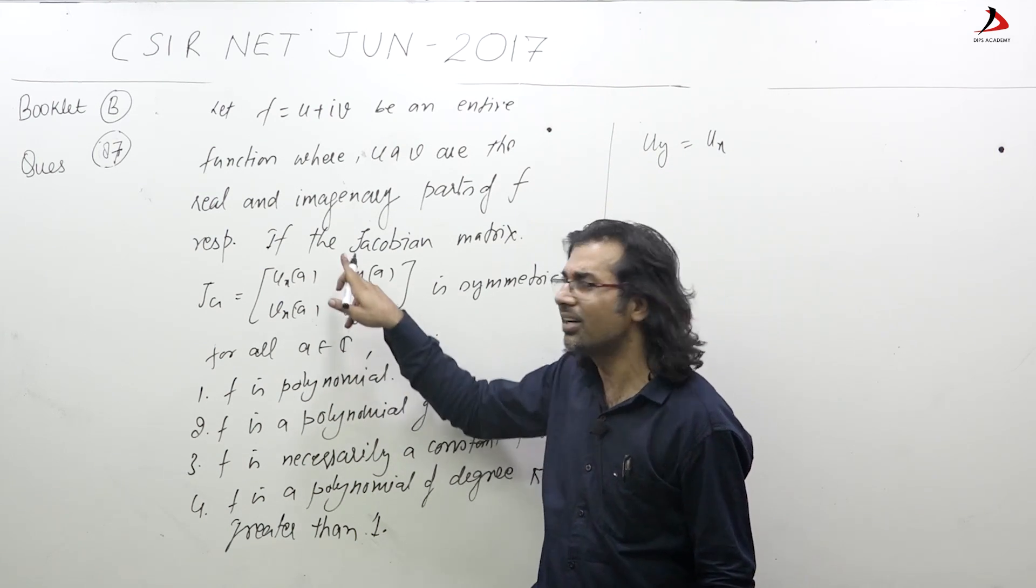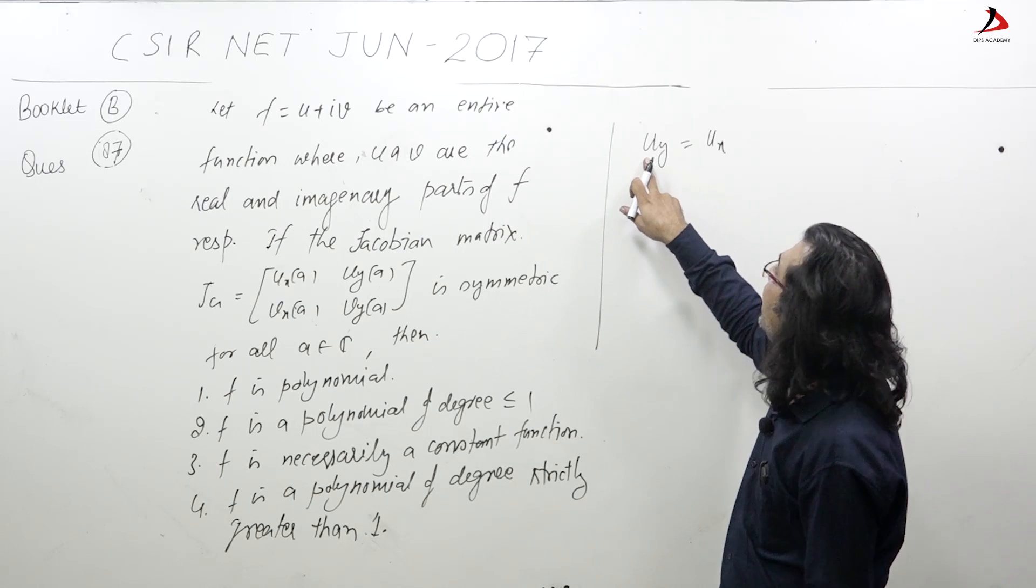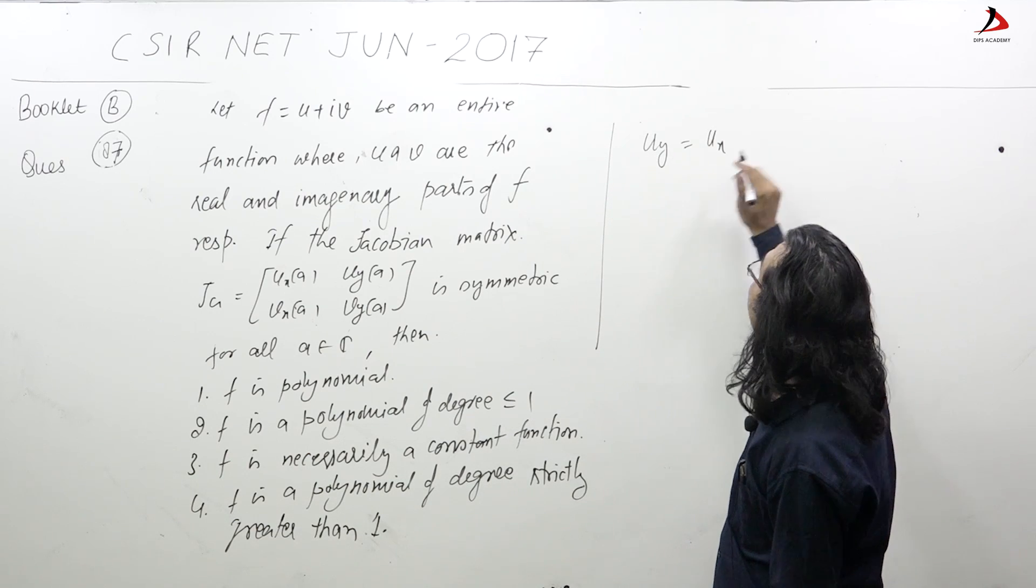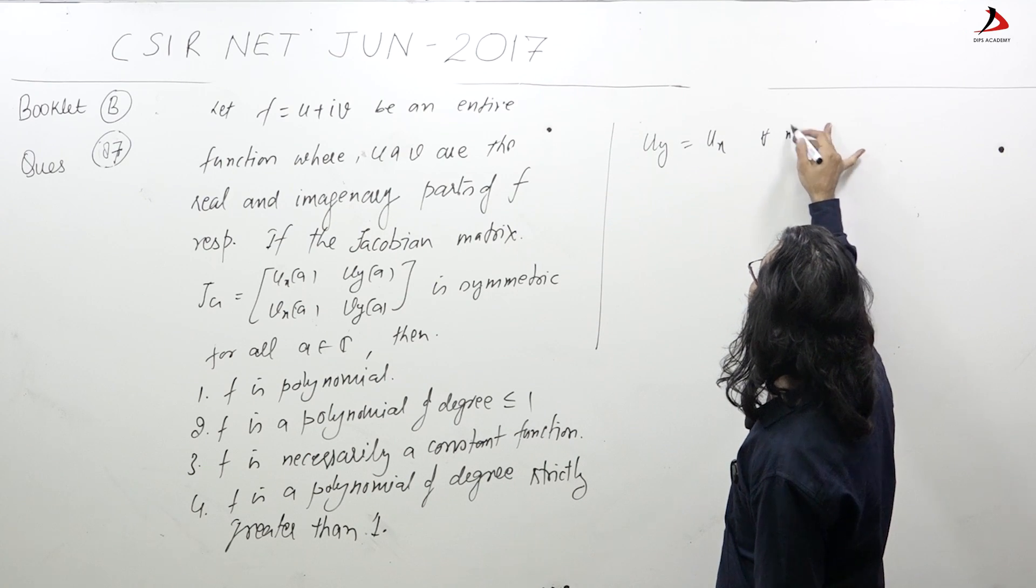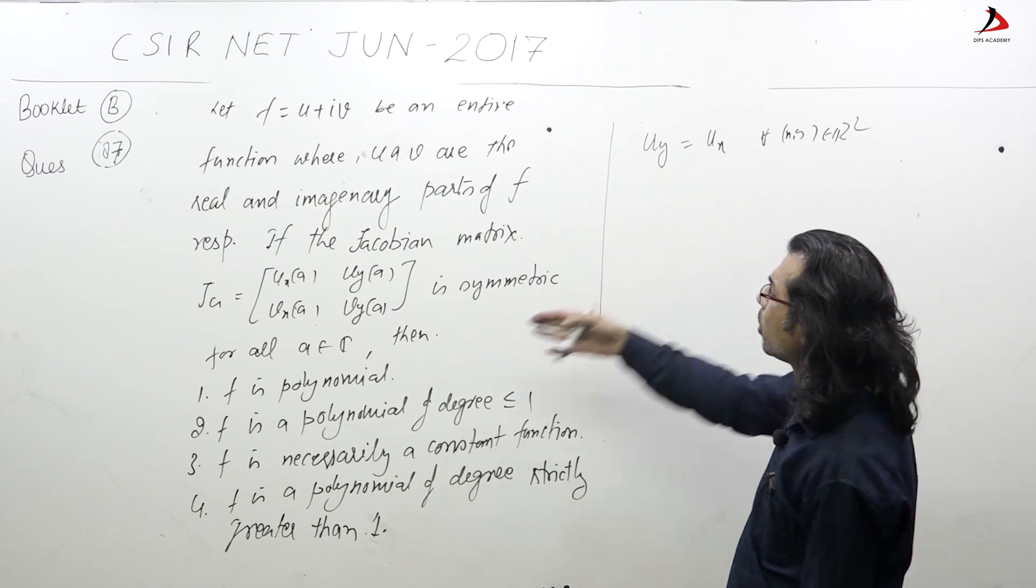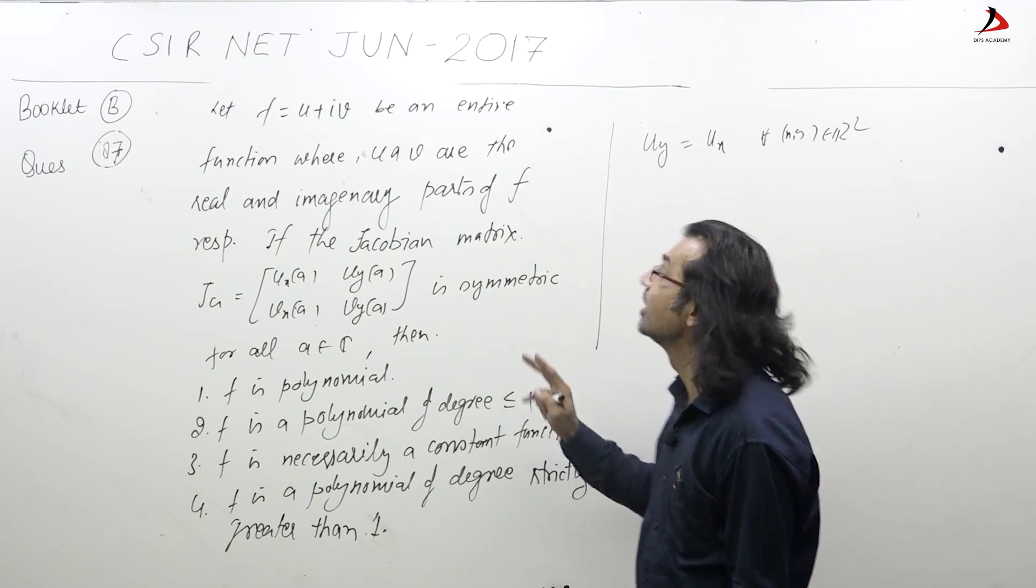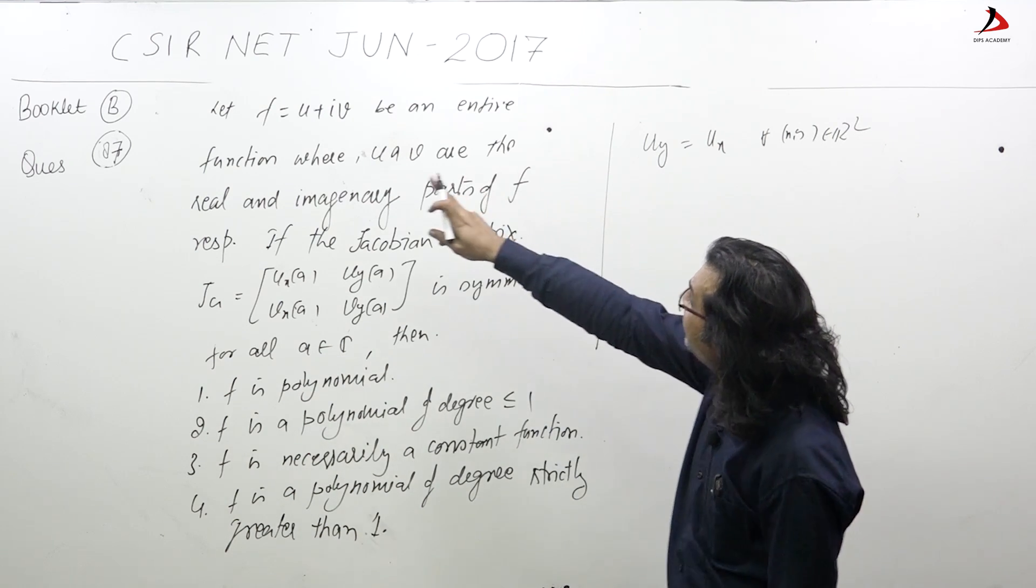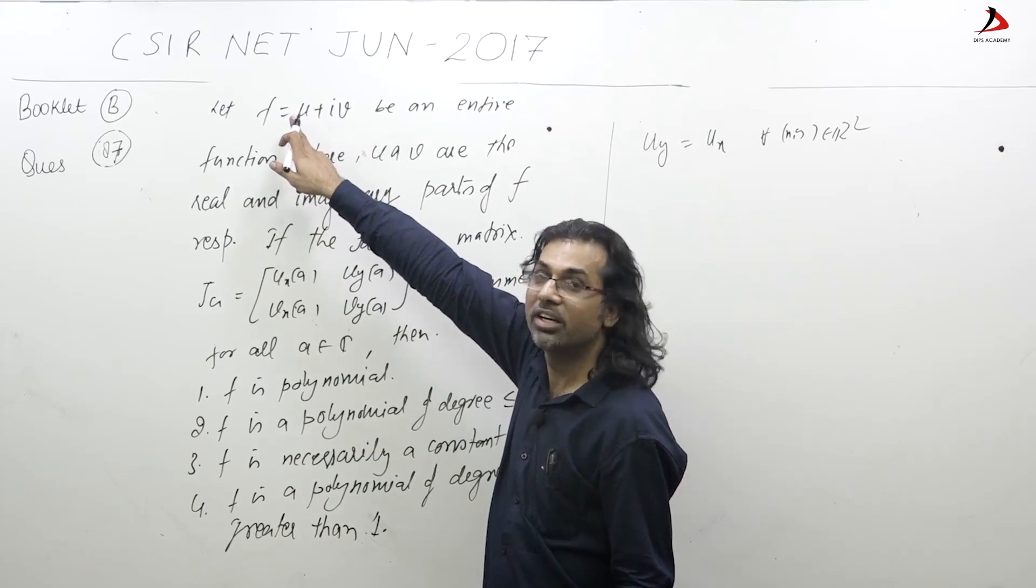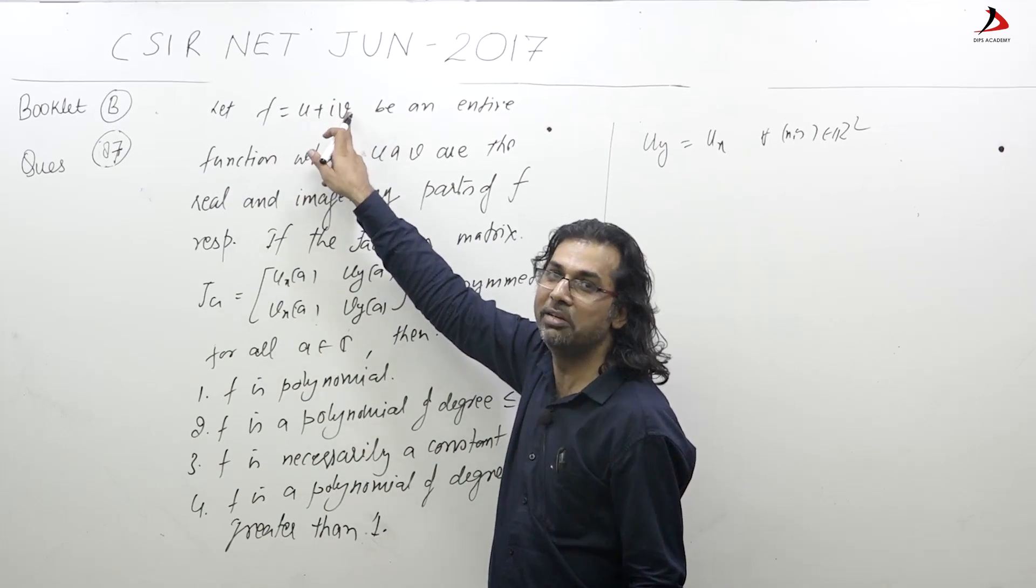Now but as f is entire, u and v must satisfy CR equation. So this implies u_y, which is equal to... this is u_y equals v_x.